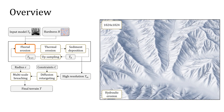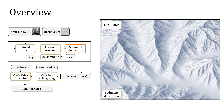Fluvial erosion carves the bedrock according to slope and drainage. Thermal erosion and granular material stabilization produce accretion regions with a space-varying repose angle. Finally, sediment deposition fills gorges and ravines with sediments and flattens valleys.